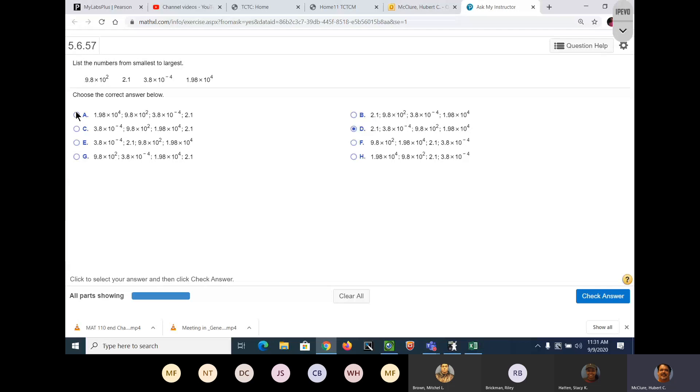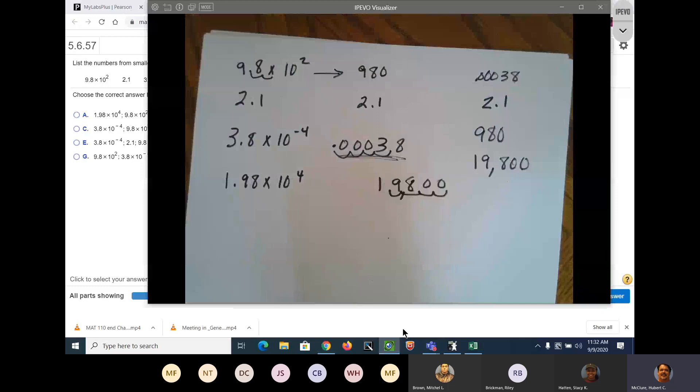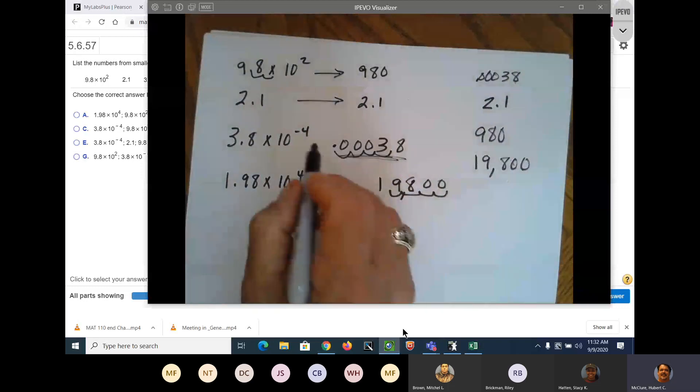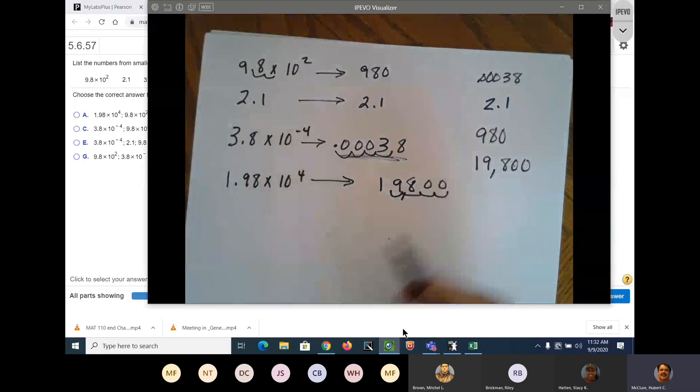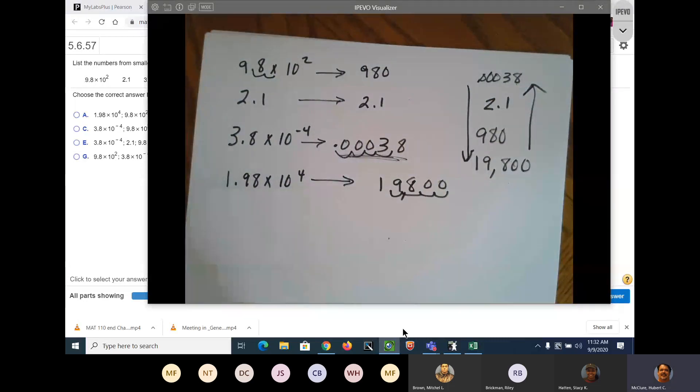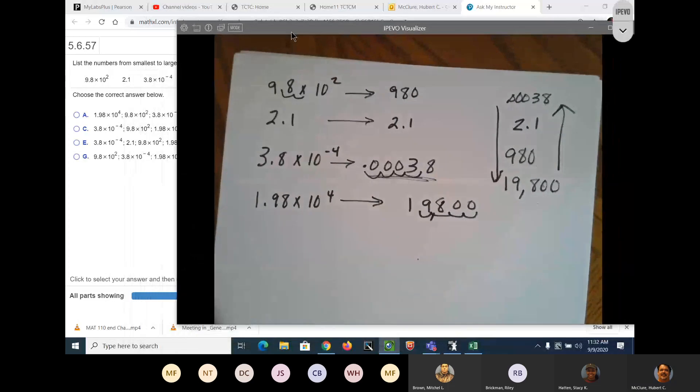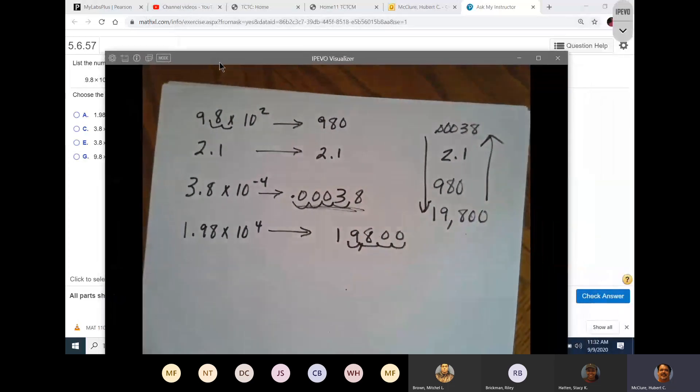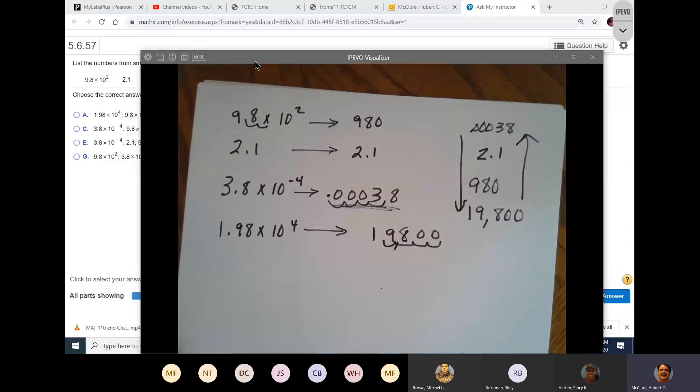So we've got, this one's the smallest: 0.0038, then 2.1, then 980, and 19,800. Now that's from smallest to largest. I changed that to 980, this one I didn't have to change, this one I changed to 0.0038, and this one I changed to 19,800. So if you're going from smallest to largest, we're looking for 3.8 first. Where's 3.8? It's either Charlie or Echo. Let's look at the next one. I got 9.8, we got 2.1, so I believe it would be Echo.